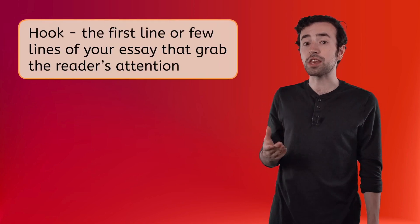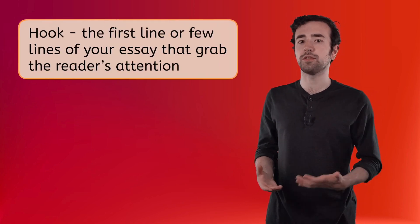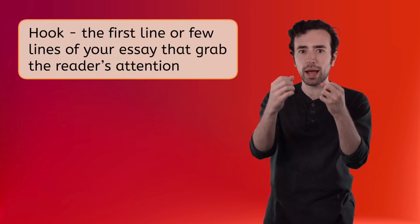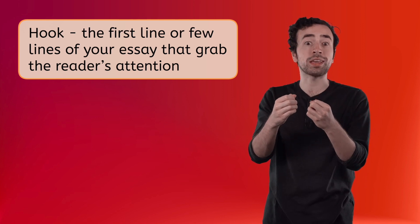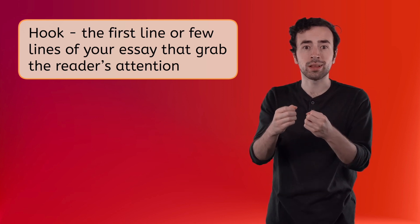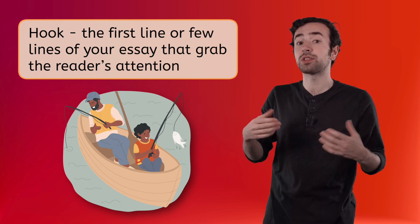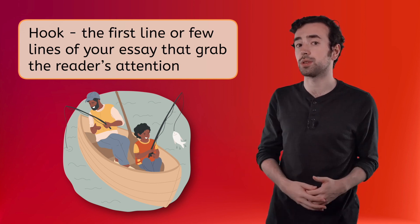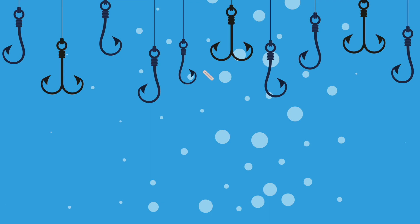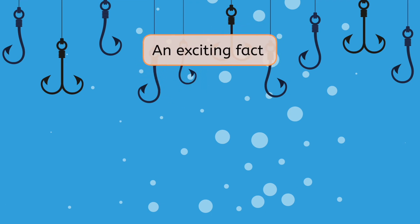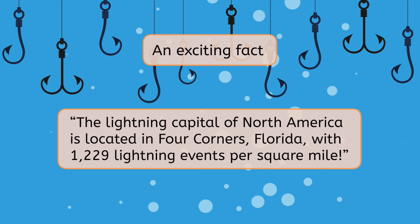A hook is the first line or few lines of your essay. Its job is to grab the reader's attention and make them want to keep reading, like hooking a fish and reeling it in. There are several types of hooks you can use. You could start with an exciting fact — for example, the lightning capital of North America is located in Four Corners, Florida, with 1,229 lightning events per square mile.